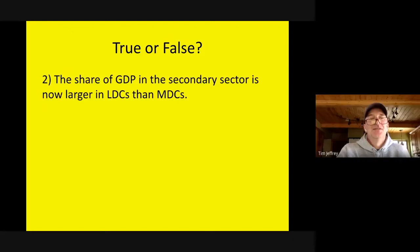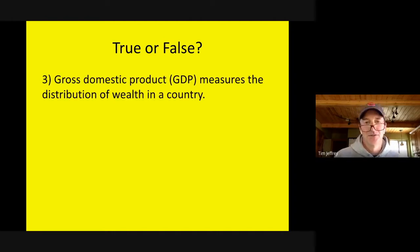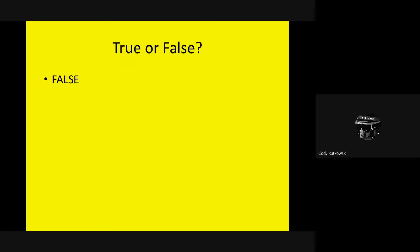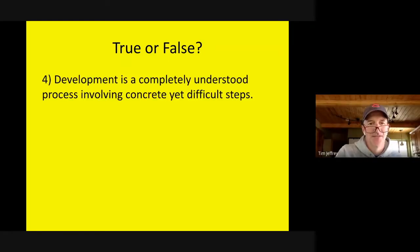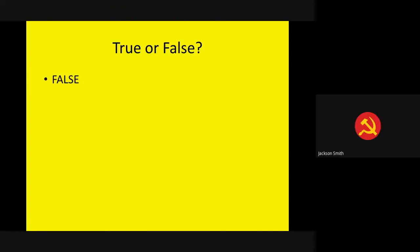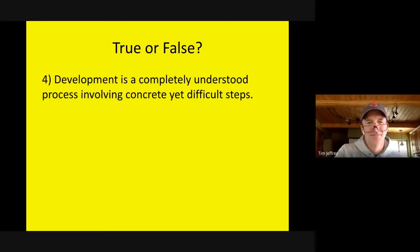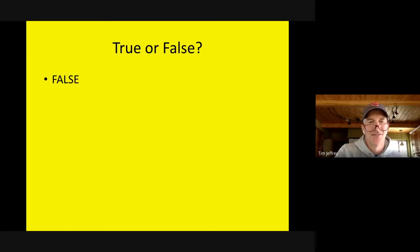The secondary sector is your manufacturing jobs — the periphery countries, China and so forth, making all the stuff for the MDCs. True or false: Gross mass of product measures the distribution of wealth in a country? False. True or false: Development is a completely understood process involving concrete yet difficult steps? False — every country is different with different products to sell, so it's not as concrete and simple as everybody thinks.